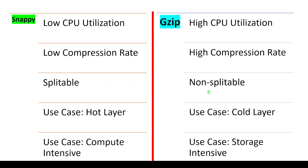These are the three main differences. Snappy is better in terms of CPU utilization and splittability. GZIP is better in terms of high compression rate. Now let me give you some use cases. The first one — a hot layer — is suitable for Snappy.